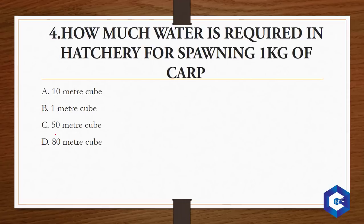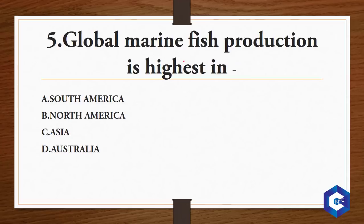How much water is required in a hatchery for spawning one kg of carp? The answer to this question will be one cubic meter — option number B. Spawning is basically the release of eggs and sperm in the water. In fisheries, you have to know how much water is required in a hatchery for spawning one kg of carp — it is one cubic meter.